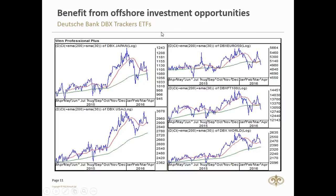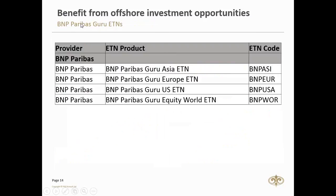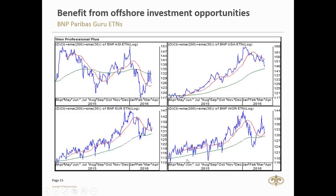I'll highlight DBX trackers and also the Parabas Gurus — there are five of them, and these are ETNs. The main difference is that ETFs are collective investment schemes mainly based on shares, whereas ETNs are somewhat less equity-oriented with different criteria. The performance is very similar across both.